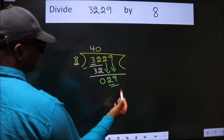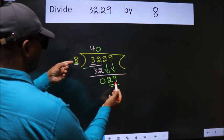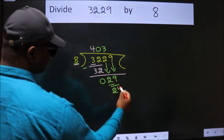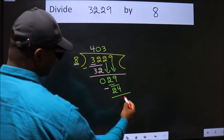So 29. A number close to 29 in 8 table is 8 times 3 is 24. Now we subtract. We get 5.